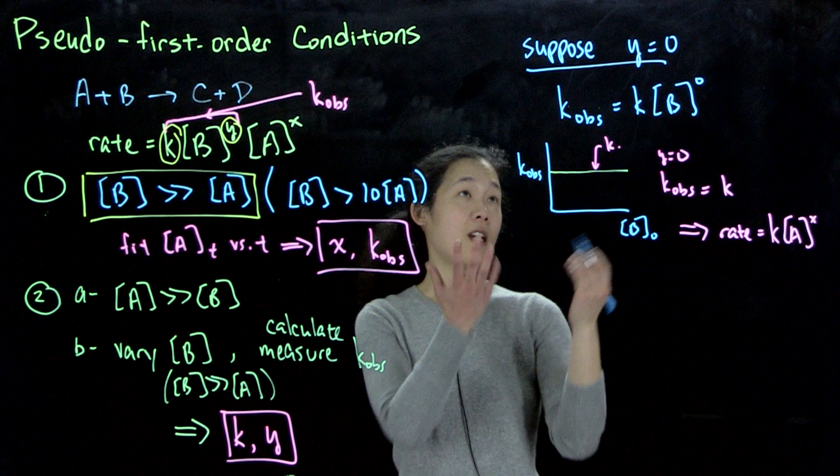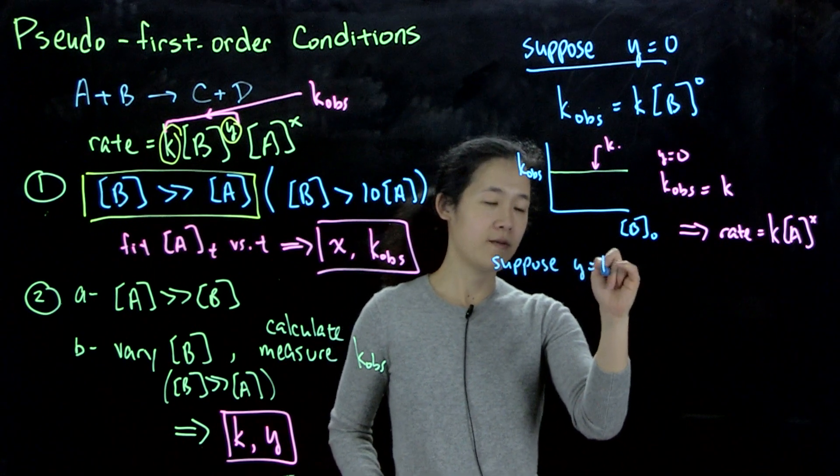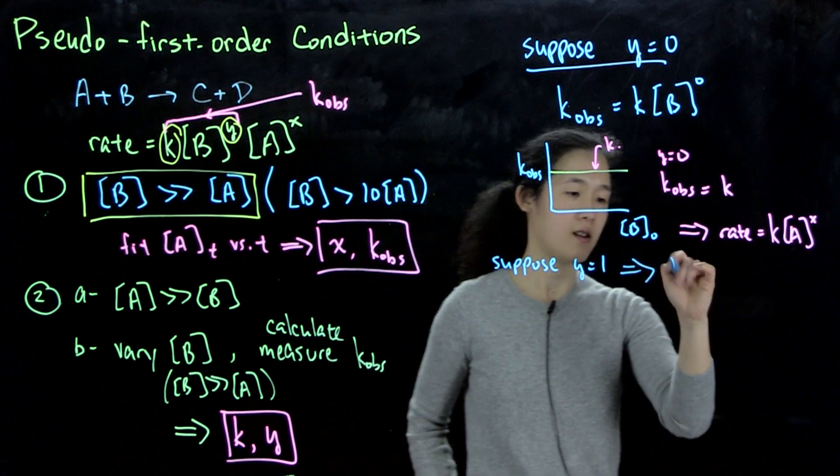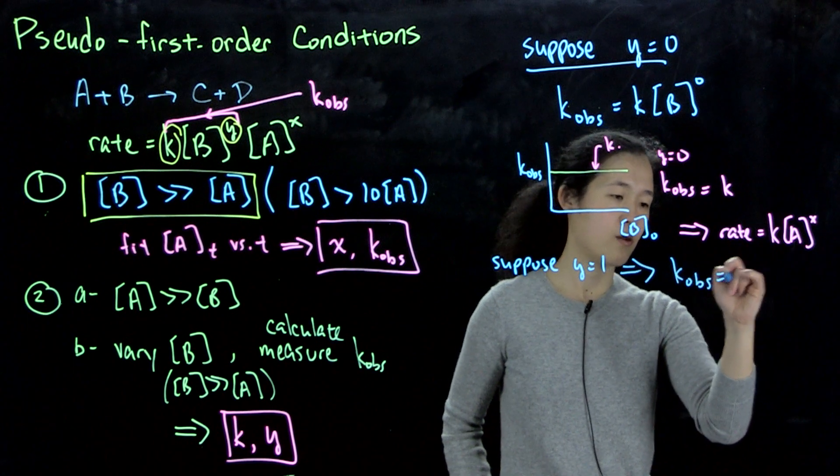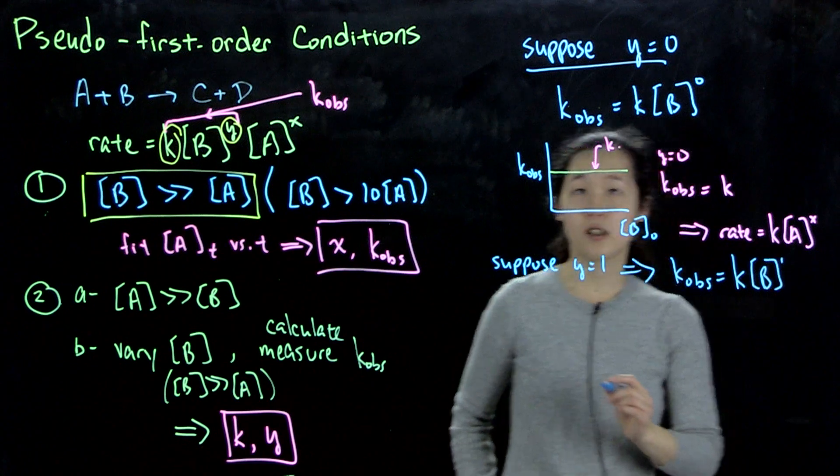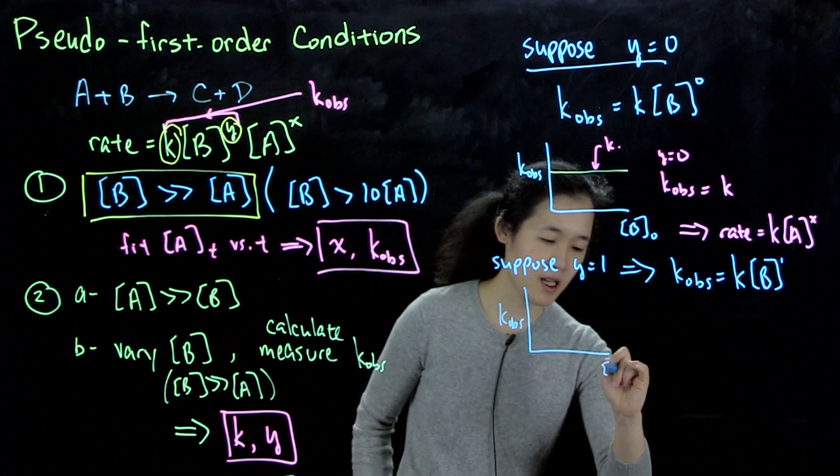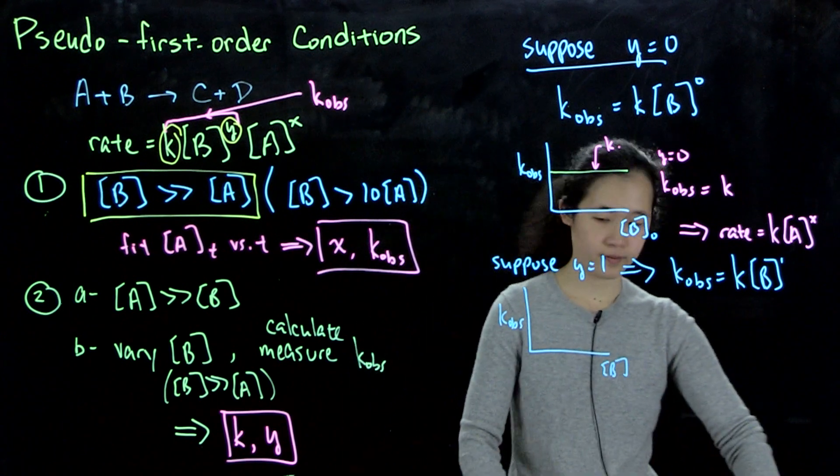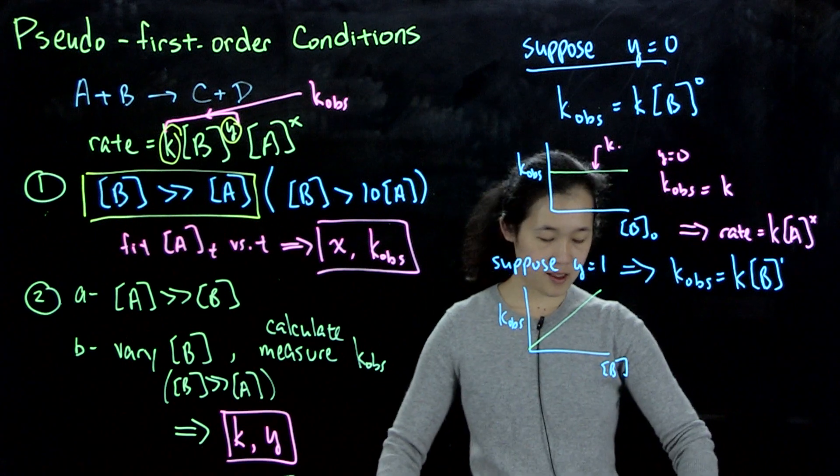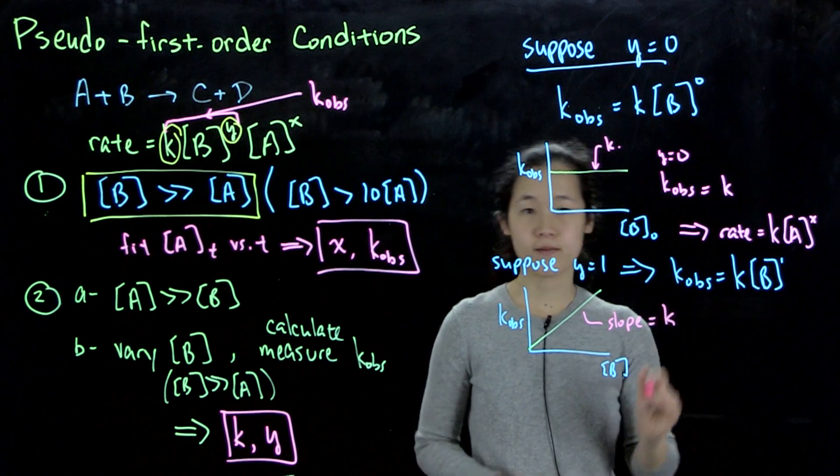Scenario one. Scenario two, let's suppose y equals 1. So first order in reactant b, so then k_ob equals k times the concentration of b to the 1. So what this means is that if we, again, try to plot k_ob versus b, we should get a line. We should get some sort of line, and then this slope equals k.